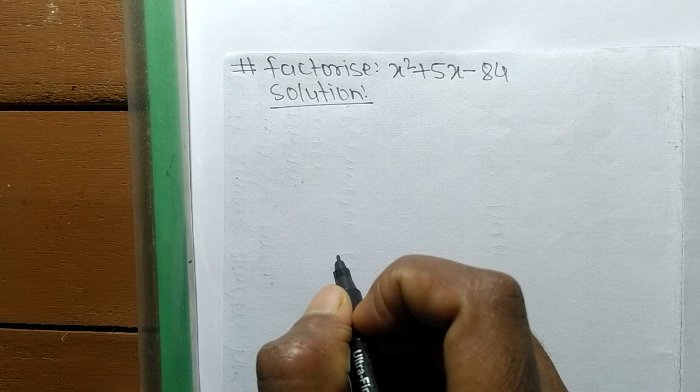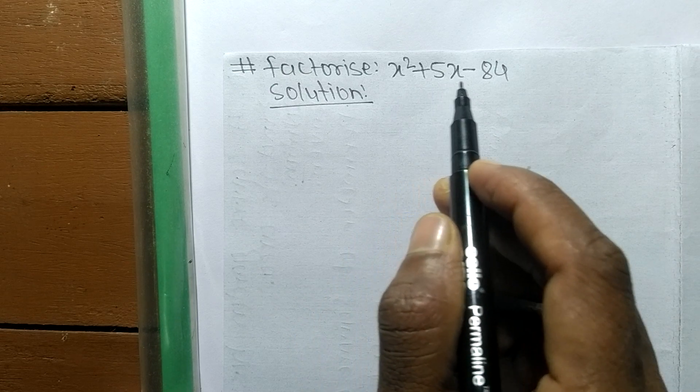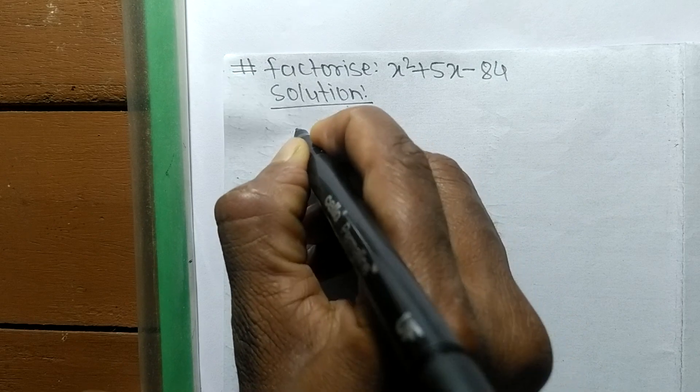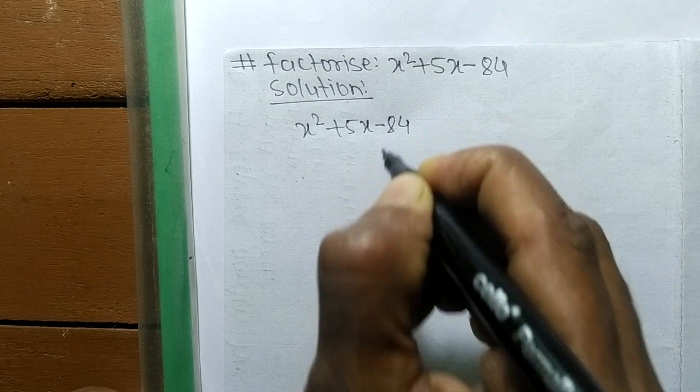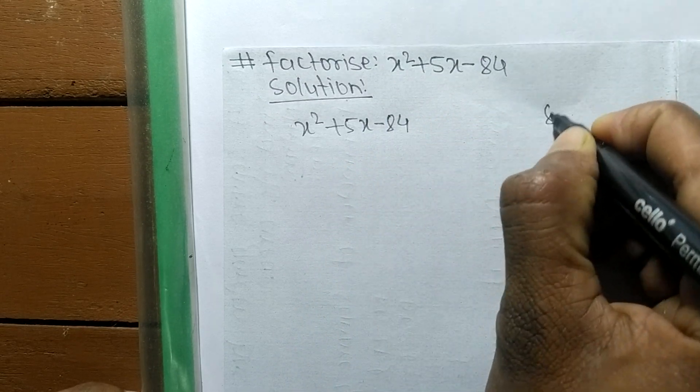Today in this video, we shall learn to factorize x² + 5x - 84. For the solution, first of all you have to find out the prime factors of 84.